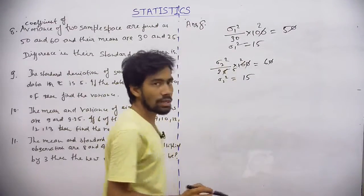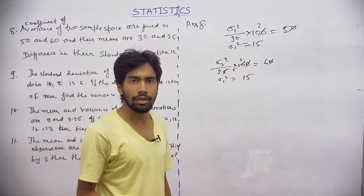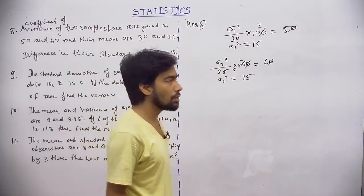So we see that the standard deviation of both observations are 15, so the difference will be 0.